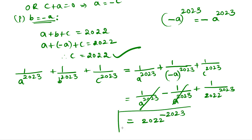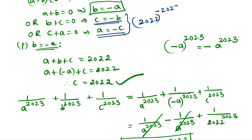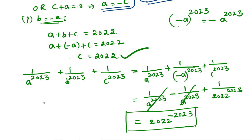So 2022^(−2023) is the answer. Note that if you take C equals negative B or A equals negative C, in both cases you also get the answer as 2022^(−2023). So this is the final answer. Hope you enjoyed the problem. If you enjoyed my explanation, please subscribe to my channel. Thank you.